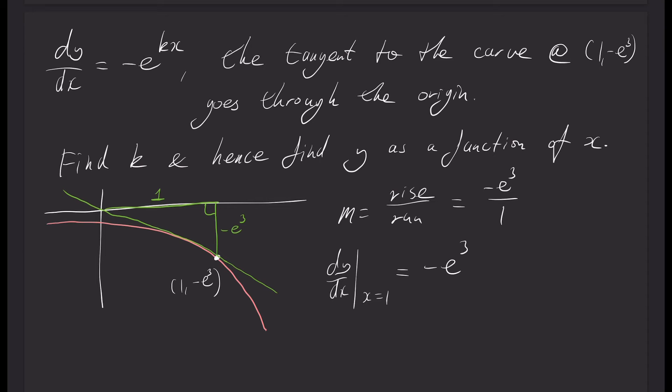So if dy/dx at x equals 1 is equal to negative e³, then it's also equal to negative e to the 3k. So what I've done there is I've taken this here and I've subbed in x equals 1. And we can see pretty quickly that therefore k is 3. So I know with high confidence that k is 3.